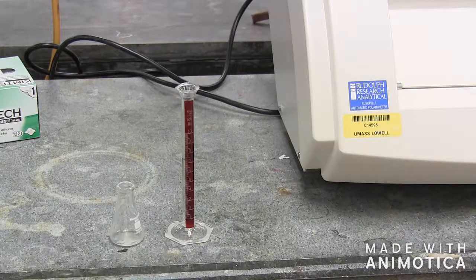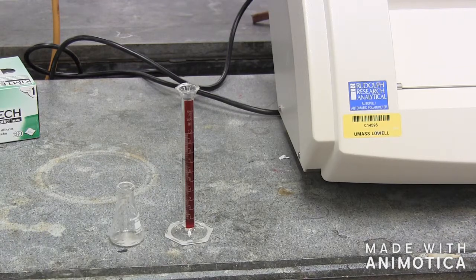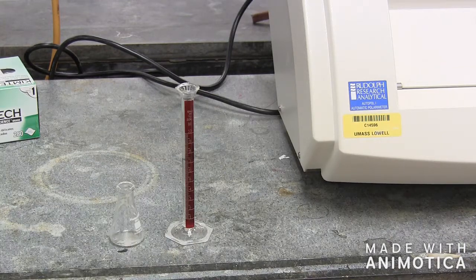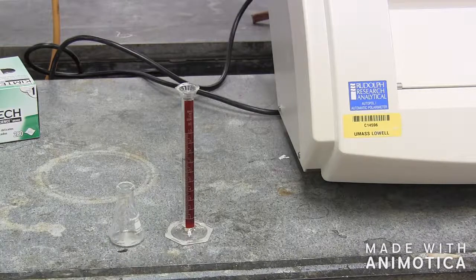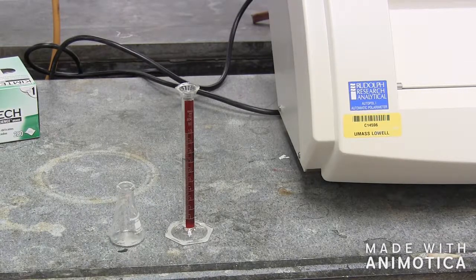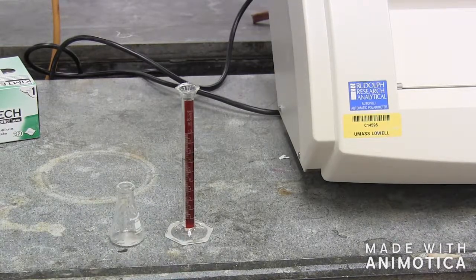In this video, we will be determining optical rotation using a polarimeter. Optical activity is the degree that an optically active or chiral compound rotates plane polarized light.